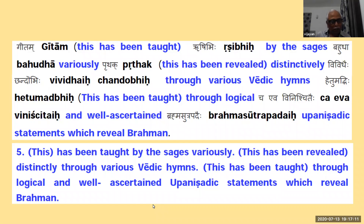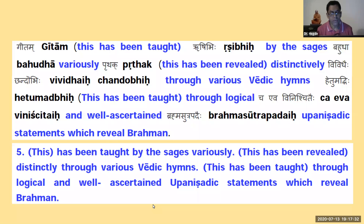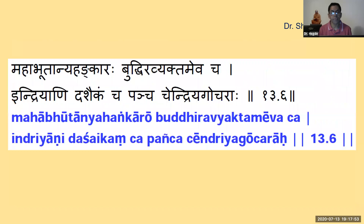To sum up: Brahma Sutra padashchaiva hetumabhir vinishchitah means these two words have been logically analyzed and conclusively established even in the Brahma Sutras. This has been taught by the sages variously, revealed distinctly through various Vedic hymns, taught through logic as well as ascertained Upanishadic statements. Thank you Colonel Vijayan for a nice explanation of this verse where Krishna is saying that whatever he is saying is not his own — it has come from our tradition. This same Kshetra Kshetrajna Vibhaga has been discussed in other texts, Vedas and also the Brahma Sutra. Now we go into a little more detail. Dr. Sheila, can you explain this particular verse?